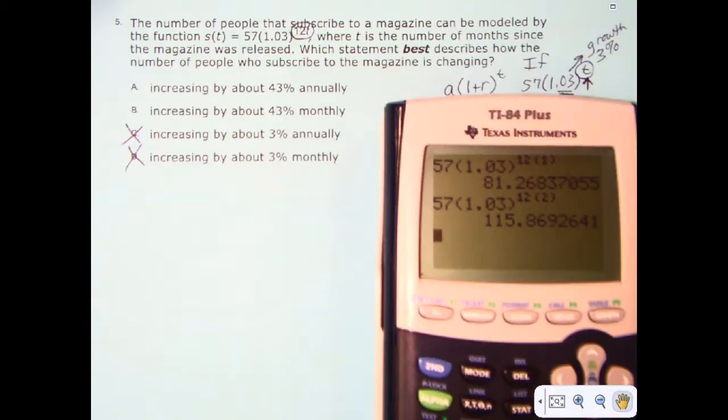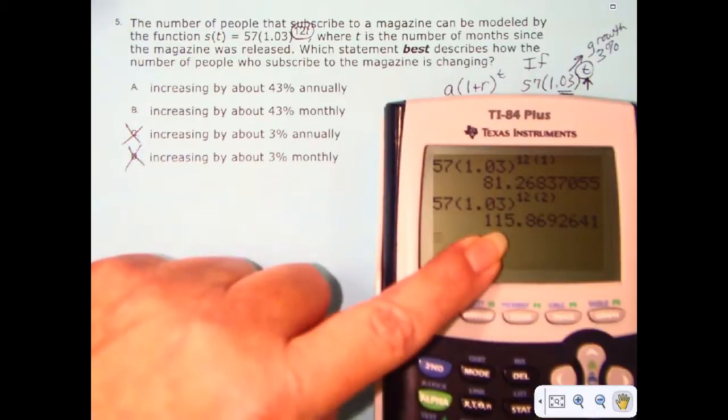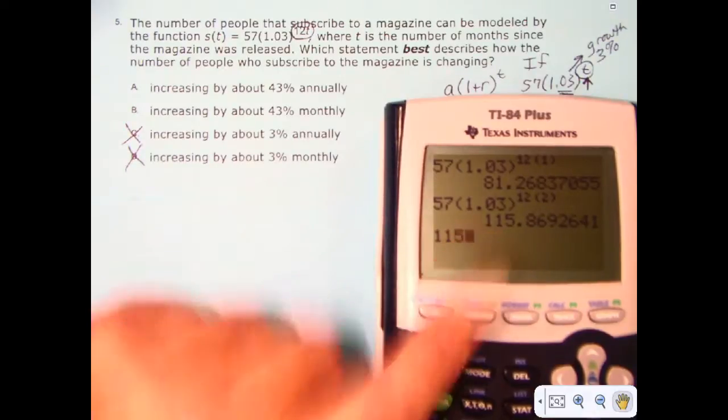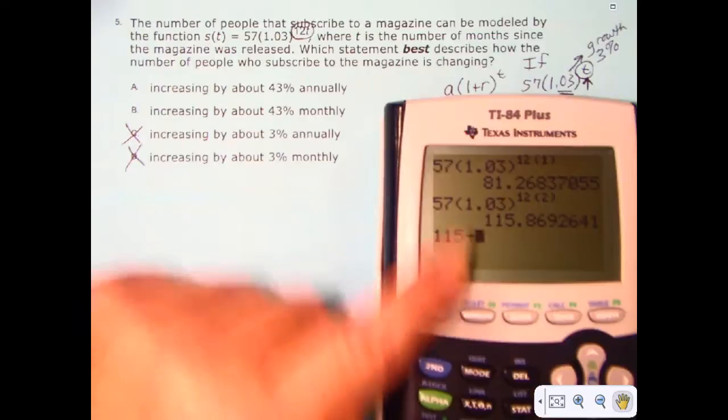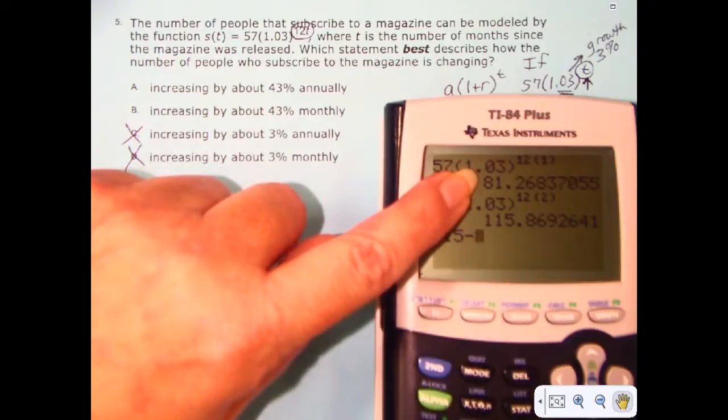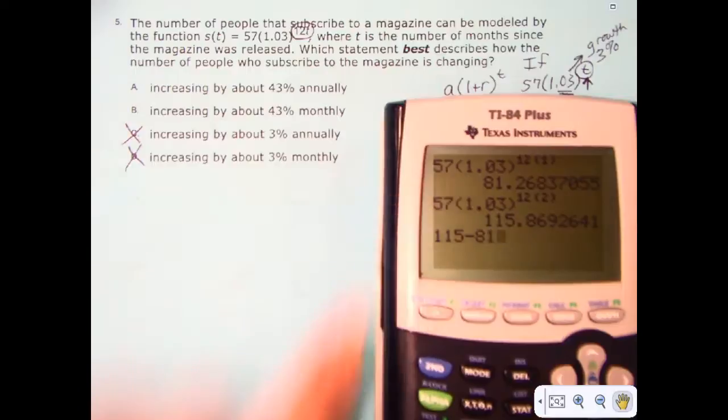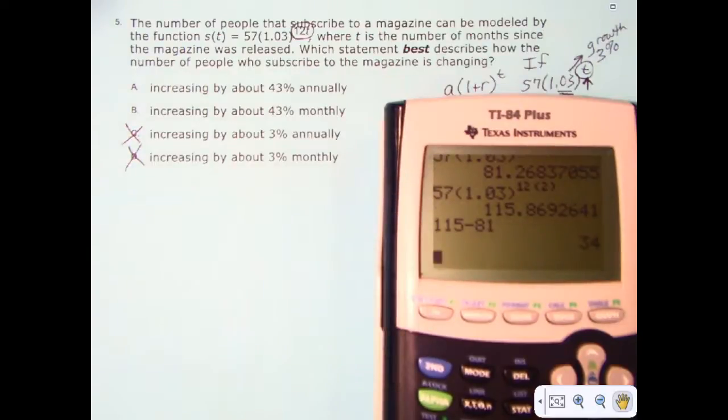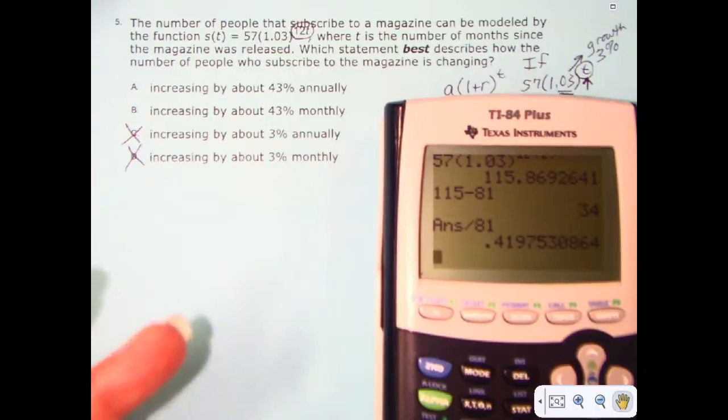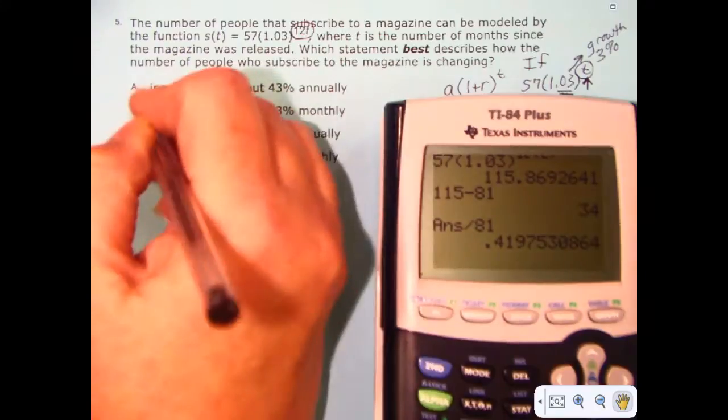Now, if I want to know exactly what this jump is, I take what I ended up with, that 115, I subtract what I had at the end of the first month, that 81, I get an answer and I divide it by what I had the first month, at the end of the first month, divided by 81. Now I get about 42%, which is about 43%, so that's our answer, but why does this work?